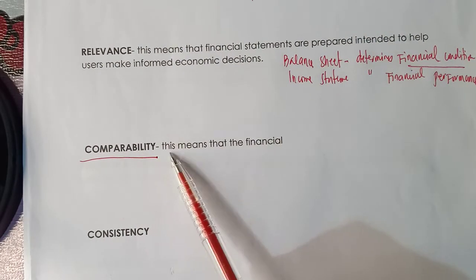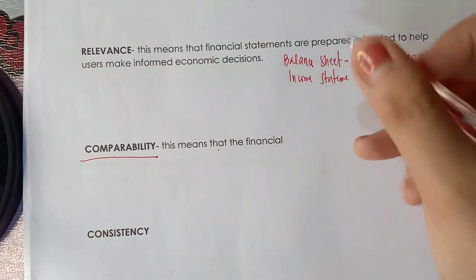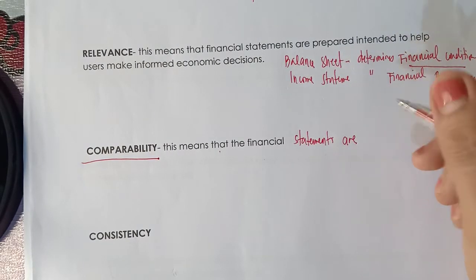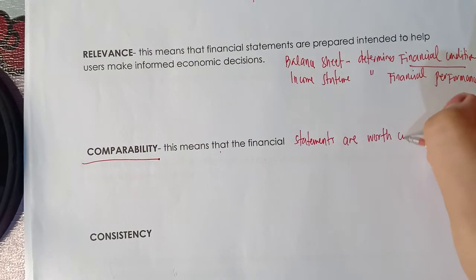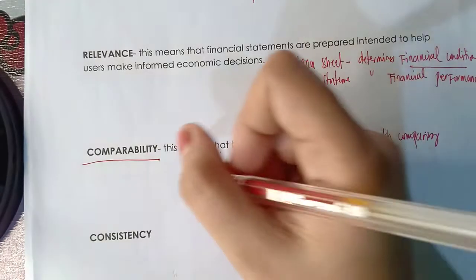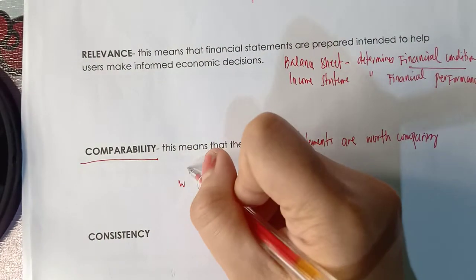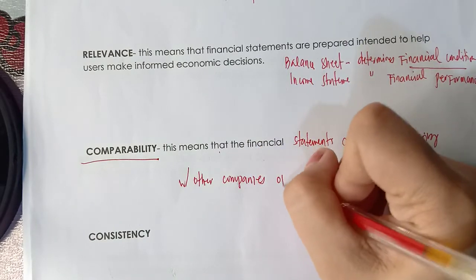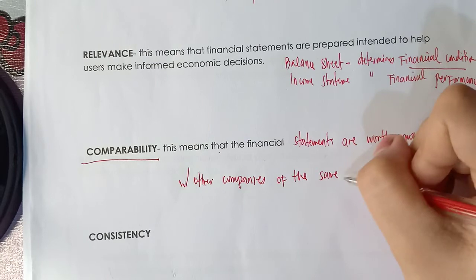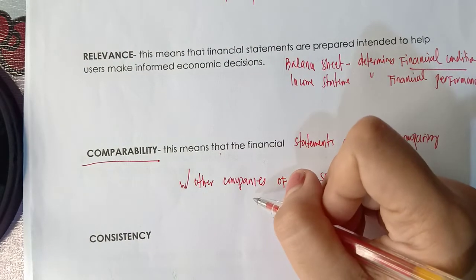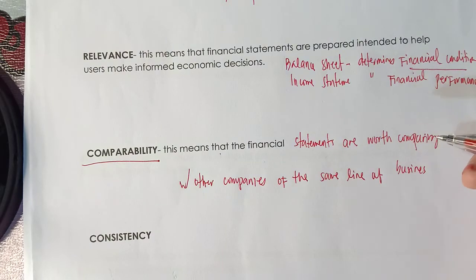The next quality is comparability. When we say comparability, it means that financial statements are worth comparing with other companies of the same line of business. By comparing, we can point out the similarities and the differences in the financial statements between those companies.